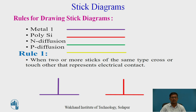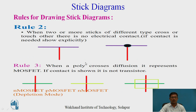Rule 1: When two or more sticks of the same type cross or touch each other, that represents electrical contact. For example, if a horizontal metal and a vertical metal meet at a point, it automatically forms electrical contact. Similarly, two polysilicon lines of the same type crossing each other form electrical contact. Rule 2: When two or more sticks of different types cross or touch each other, there is no electrical contact. For example, a horizontal metal line and a vertical polysilicon line crossing do not form electrical contact.